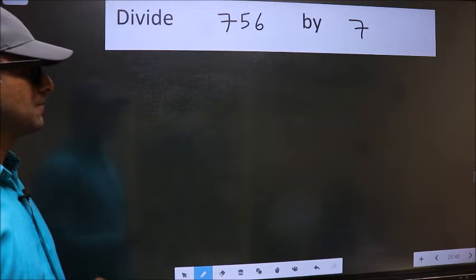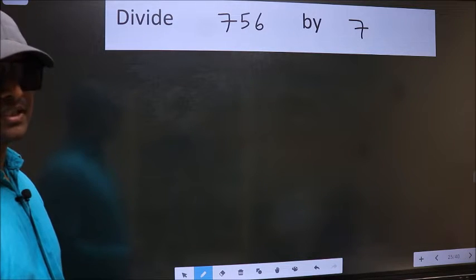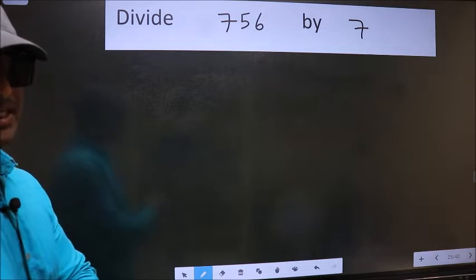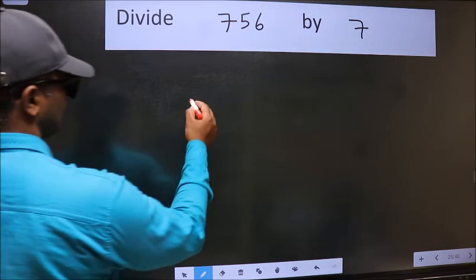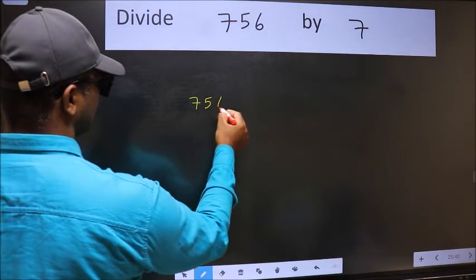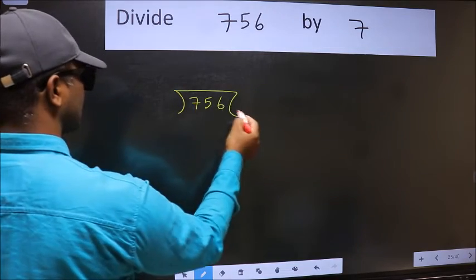Divide 756 by 7. To do this division, we should frame it in this way. 756 here and 7 here.